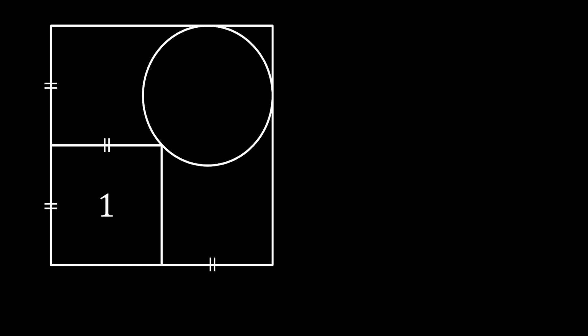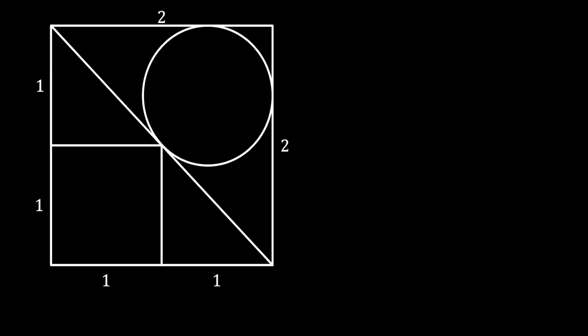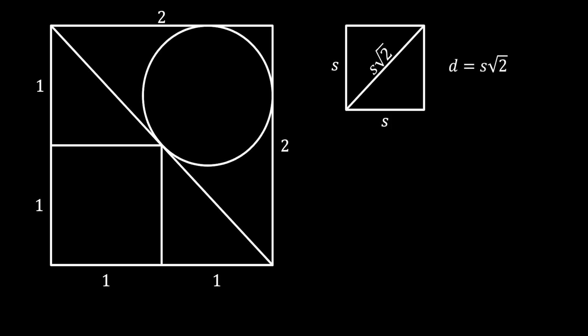We start this method the same way: since the area of the small square is 1, its sides are equal to 1, and the remaining segments of the big square are equal to 1 as well, meaning the sides of the big square equal 2. Now let's draw the diagonal of the big square from the upper left corner. This diagonal passes through the intersection point between the circle and the small square, since the small square is twice as small. Using the square diagonal property, the big diagonal equals 2 times square root of 2.